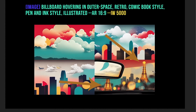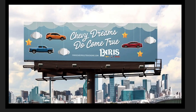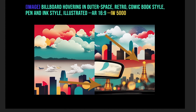Going back to our example with the perfect billboard — nothing could possibly go wrong — we got back results where Midjourney picked up on the city, the clouds, and for some reason we got the Eiffel Tower, not once but twice. If you look at the billboard in the image, it says 'Paris' underneath 'Chevy Dreams Do Come True.' So Midjourney actually read the text in the image and used that as the focus — in this case, the Eiffel Tower. The image weight was really high, and you can see that the style information was almost completely disregarded.